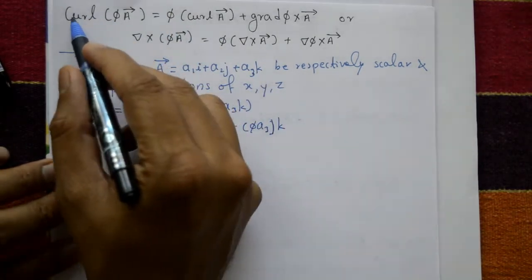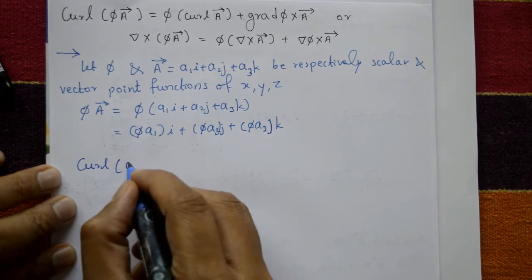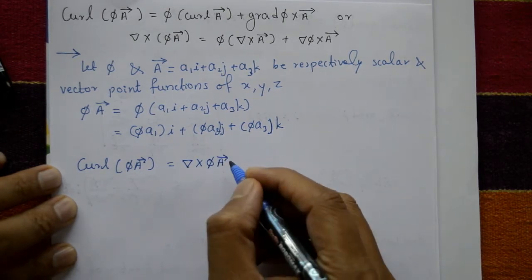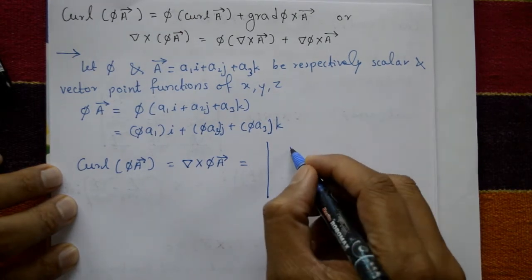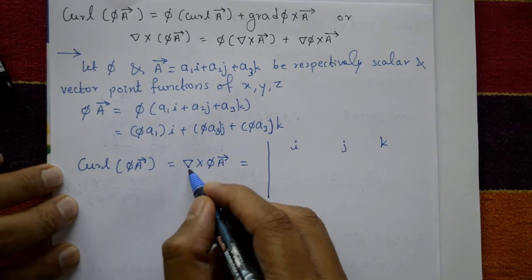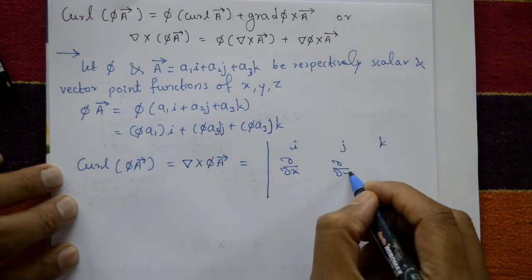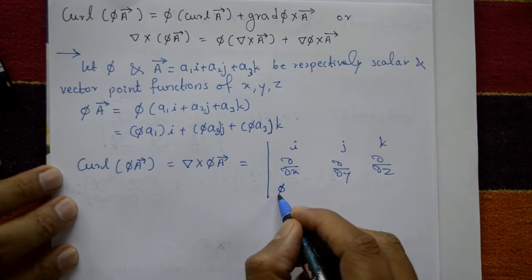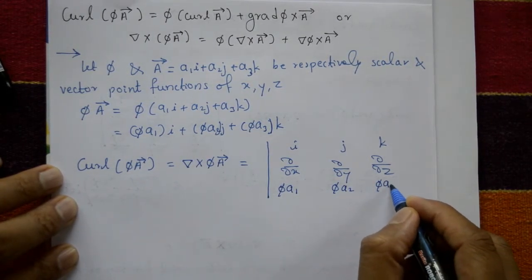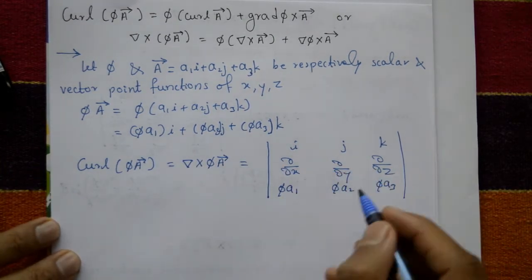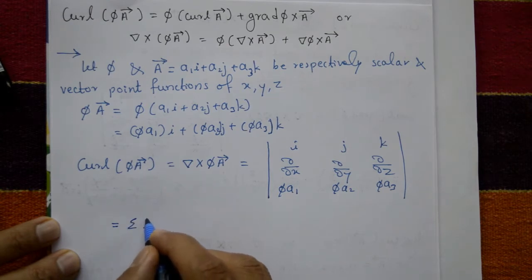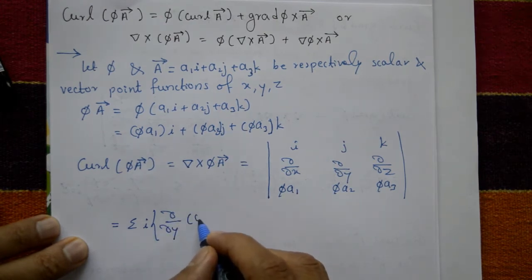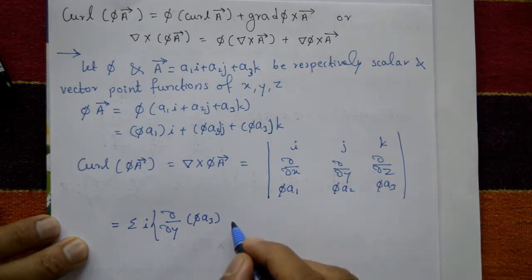Now compute curl of φA, that is del cross (φA), using the determinant form with i, j, k in the first row; ∂/∂x, ∂/∂y, ∂/∂z in the second row; and φ·a1, φ·a2, φ·a3 in the third row. Expanding the determinant gives summation of i times (∂(φ·a3)/∂y minus ∂(φ·a2)/∂z).